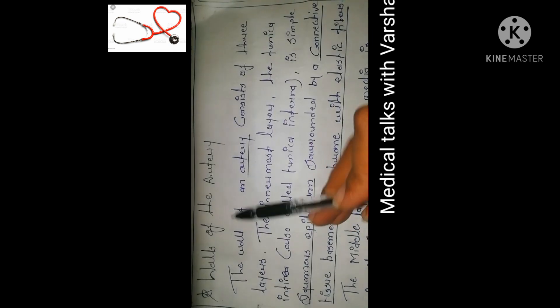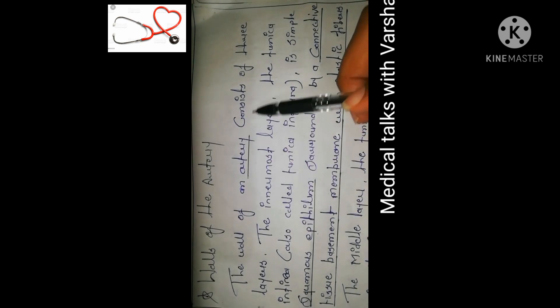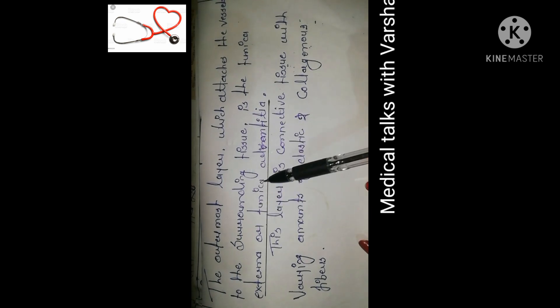Next topic: walls of the arteries. The wall of an artery consists of three layers. The first and outermost layer is the tunica adventitia, also called tunica externa. This outer layer is made of fibrous tissue — specifically collagen fibers — that protect the blood vessels.